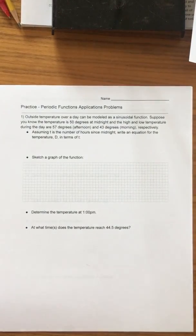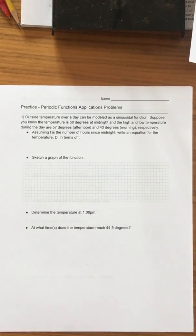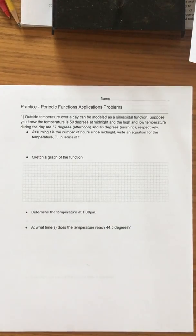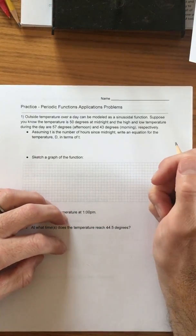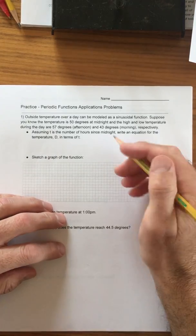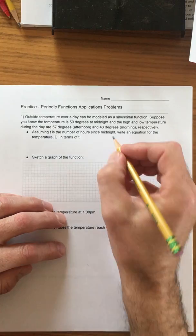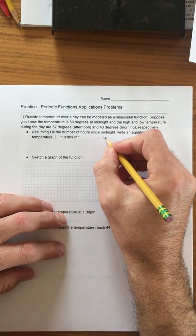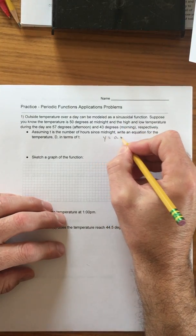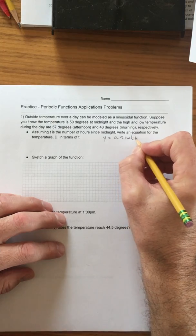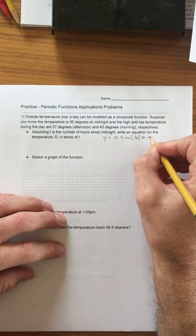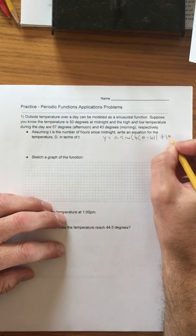Hey, let's do a little math here. Periodic functions applications problems. We're going to make some assumptions as we read this. The outside temperature over a day can be modeled as a sine function, so we know that's going to be y equals a sine b theta minus h plus k.